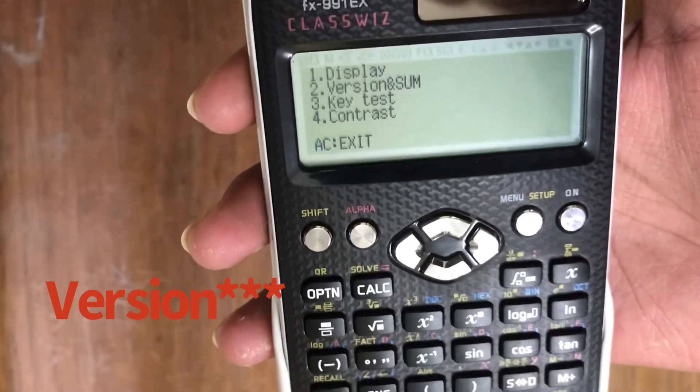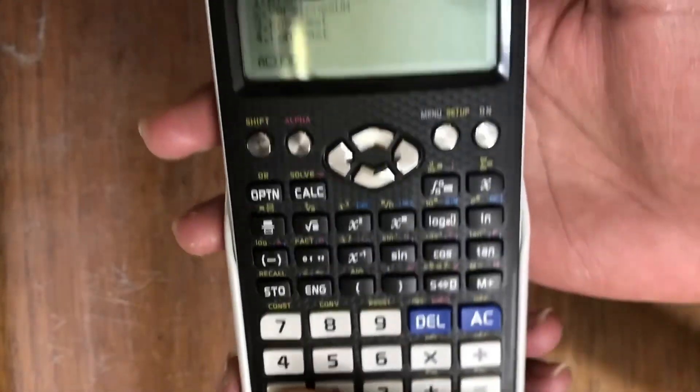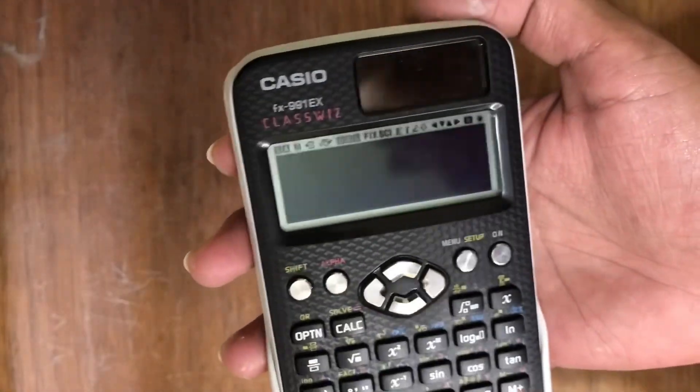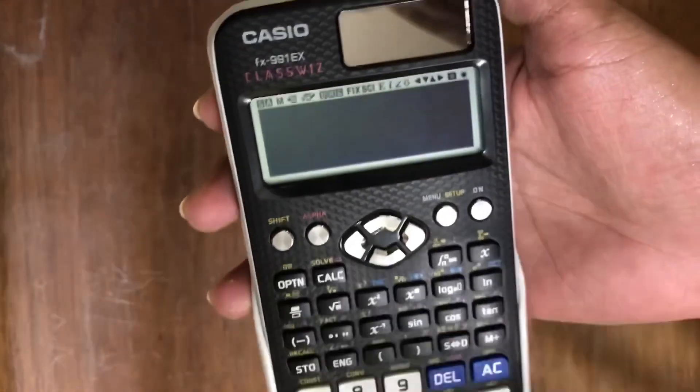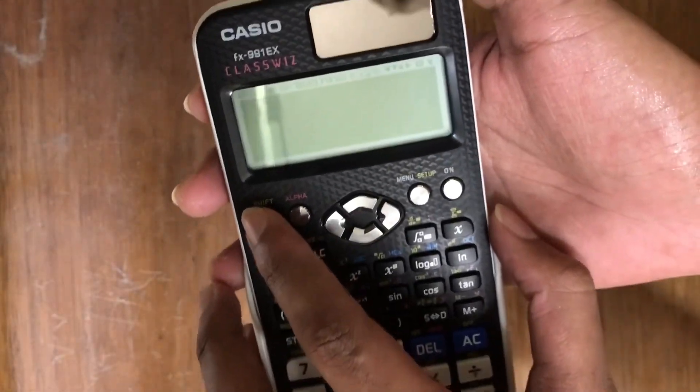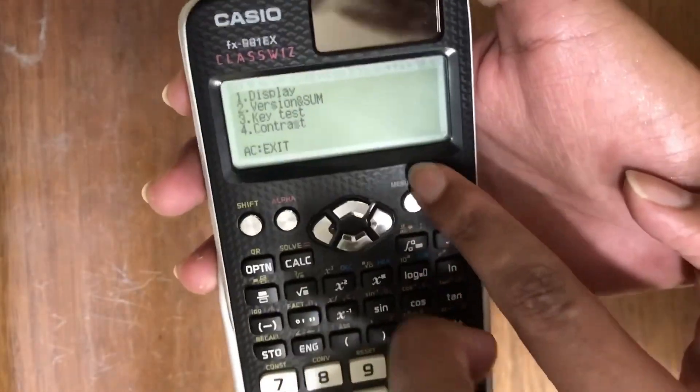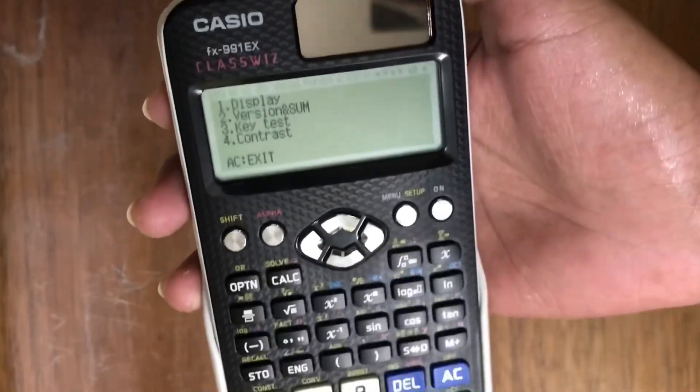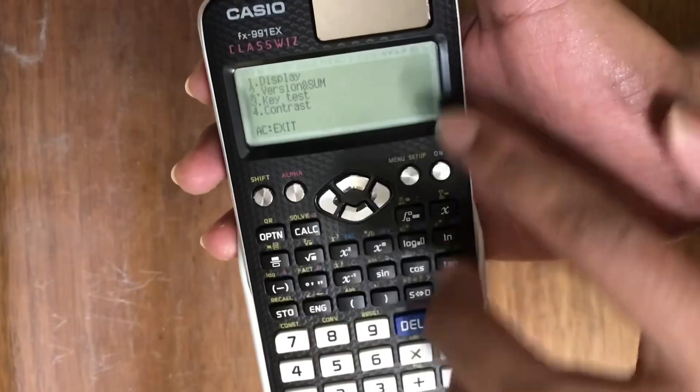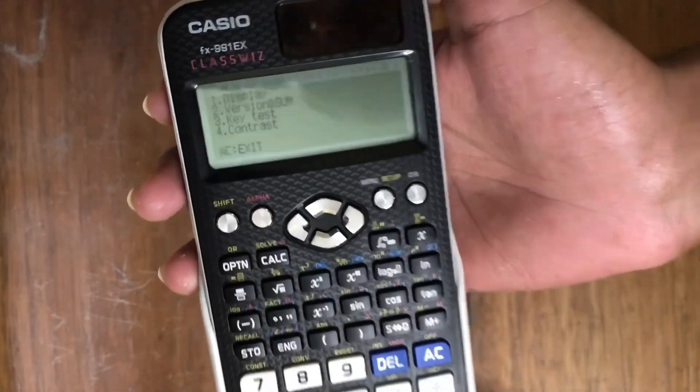In the fake one this won't come, but in the real one this will come. Here we can see display, vector, key test, contrast. We'll go one by one. We press the display button and here we can see the full display. We have to press shift twice to come back to our menu. In the fake one there will be nothing like this. We've checked the display—it's okay.